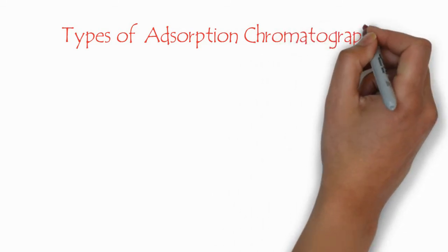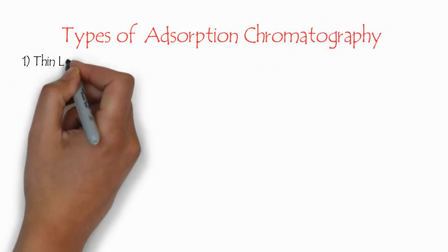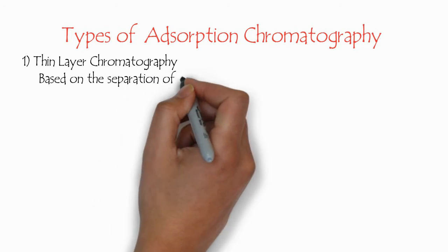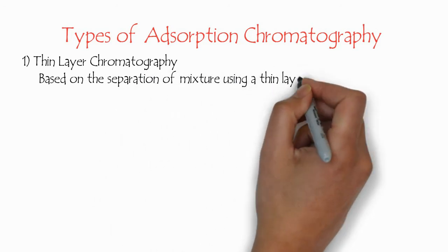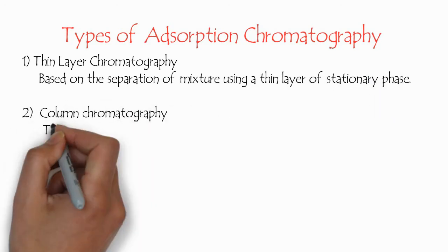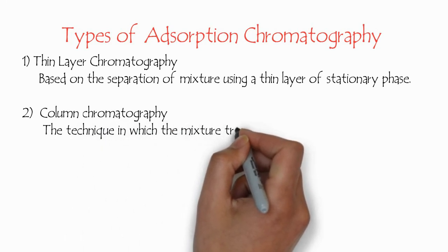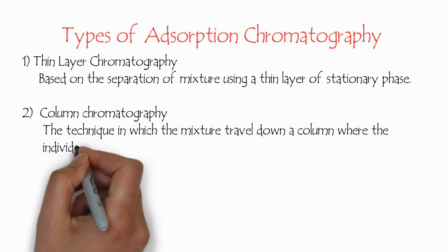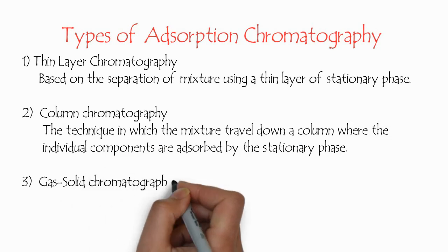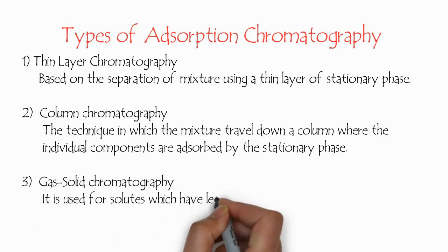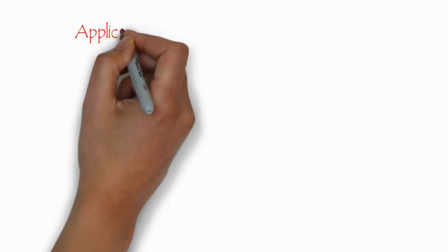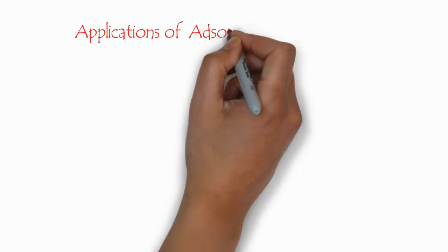Types of adsorption chromatography: The first important one is thin layer chromatography, which is based on the separation of a mixture using a thin layer of stationary phase. The second class is column chromatography, where the mixture travels down a column and individual components are absorbed by the stationary phase. The third one is gas-solid chromatography, used for solutes which have less solubility in the stationary phase.